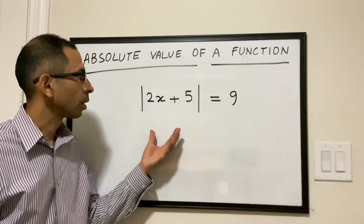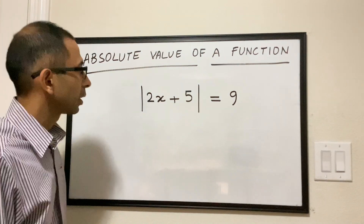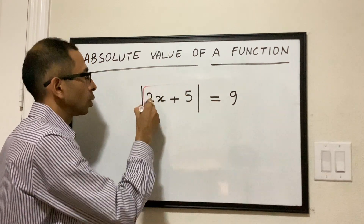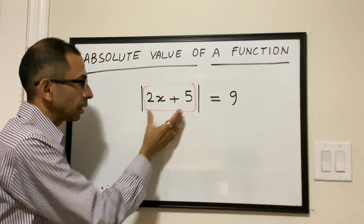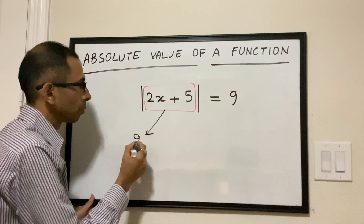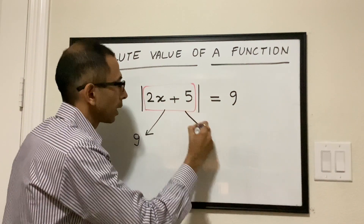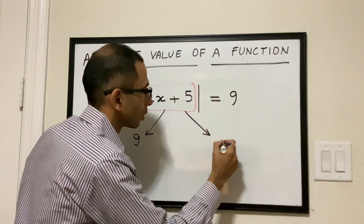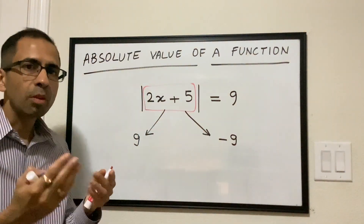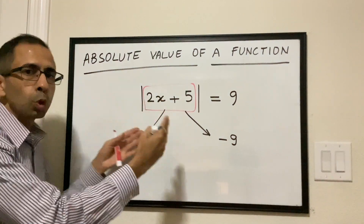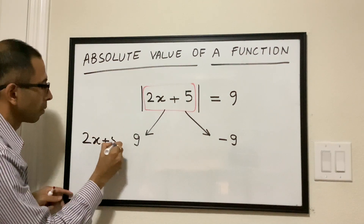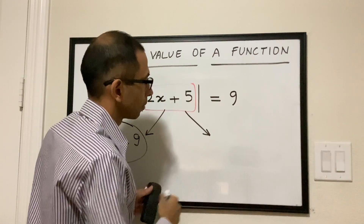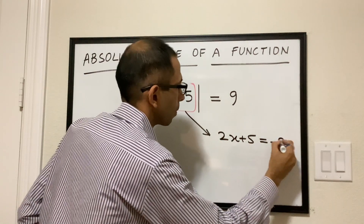Let's now try to solve an equation like this. The entity inside the vertical bars — in this case 2x plus 5 — can be equal to 9, because the absolute value of 9 is 9. And that entity can also be minus 9, because the absolute value of negative 9 is also 9. So when we solve something like this, we break it into two scenarios. The first scenario is 2x plus 5 equals 9, and the other is 2x plus 5 equals minus 9, and we solve each.